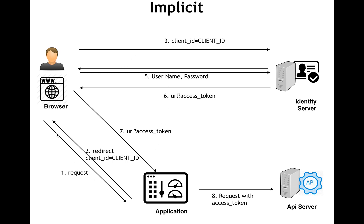The implicit flow looks very similar to most parts of the authorization code flow, with a few steps missing. Looking at the initial steps, it's the same as authorization code: you make a request, you're redirected, the user gets authenticated. However, whereas in authorization code you are issued an auth code, here you are directly issued an access token, which you can use to access the API directly.